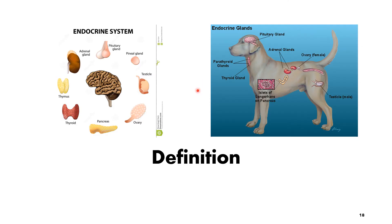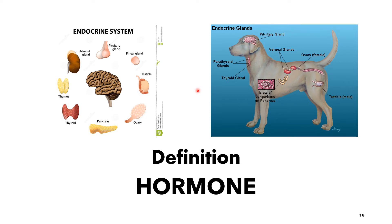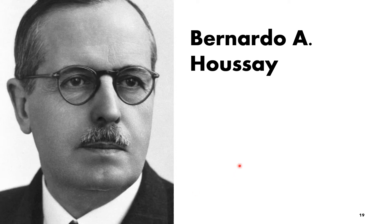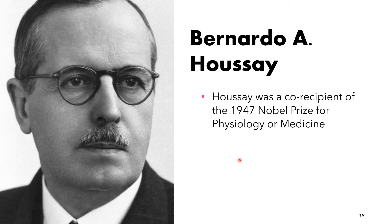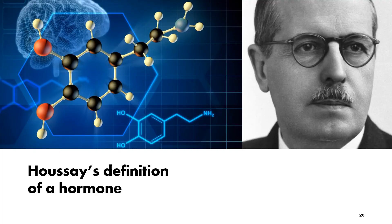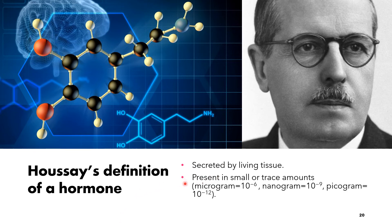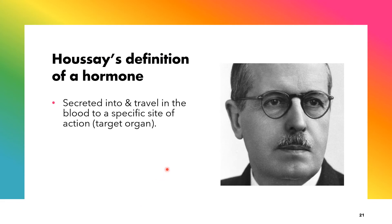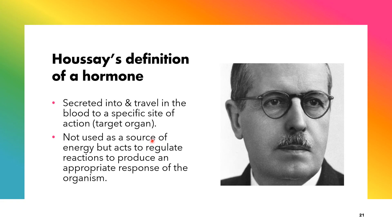The slides to follow will enumerate some definitions of a hormone as authored by Nobel Prize winner Bernardo A. Houssay. He was co-recipient of the 1947 Nobel Prize for Physiology or Medicine for discovering the role played by pituitary hormones in regulating the amount of glucose in animals. According to Houssay, hormones are secreted by living tissue and are present in small amounts — in microgram, nanogram, and even picogram quantities. Hormones are also secreted into and travel in the blood to a specific site of action, that is the target organ. Hormones are not used as a source of energy but act to regulate reactions to produce an appropriate response of the organism.